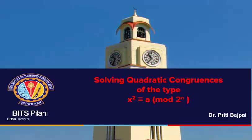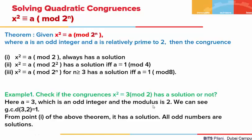Hello everyone. Today we are going to learn how to solve quadratic congruence of the type x squared is congruent to a mod of 2 to the power n.